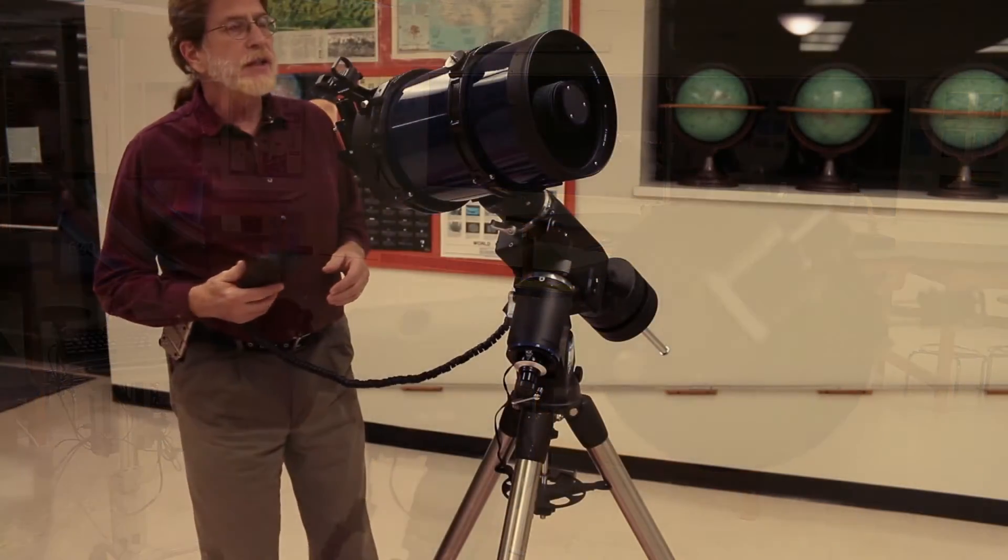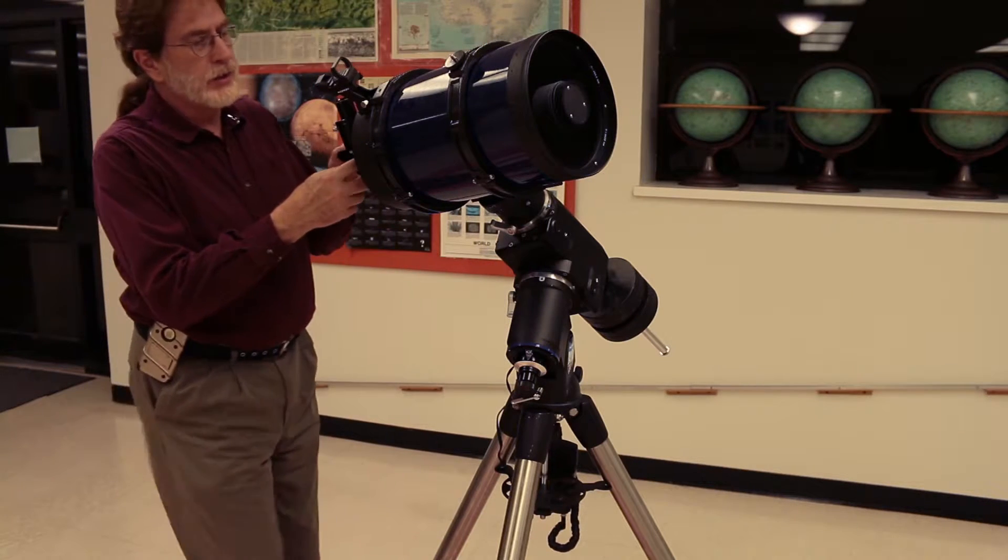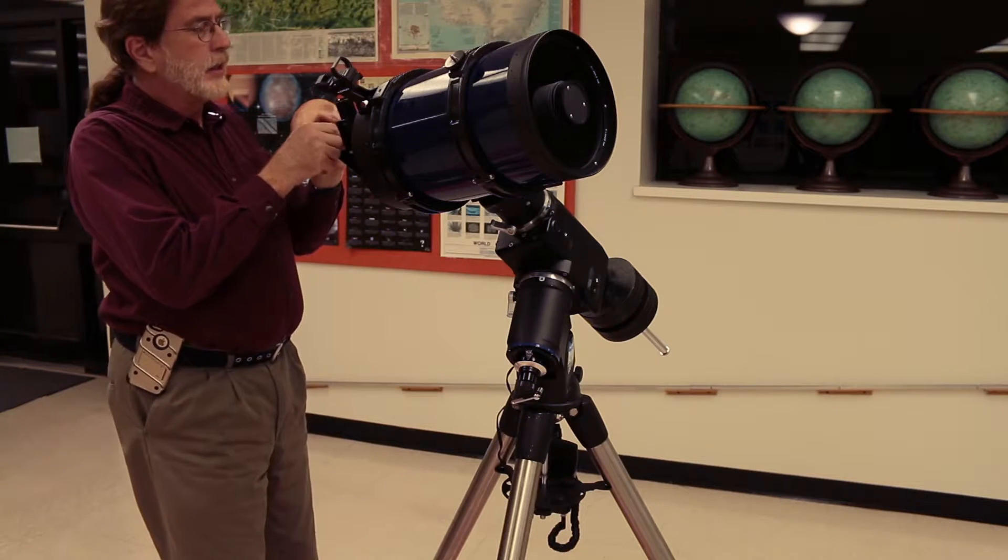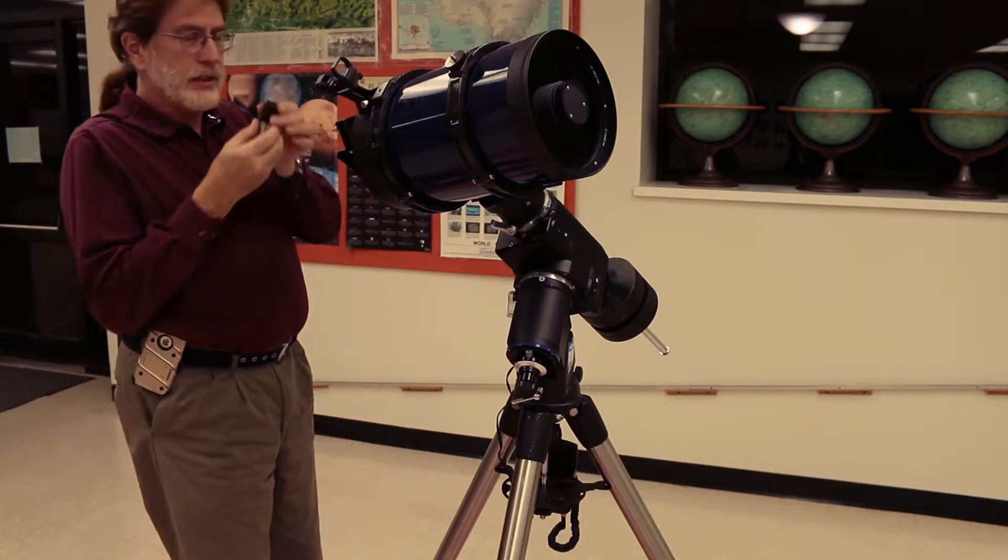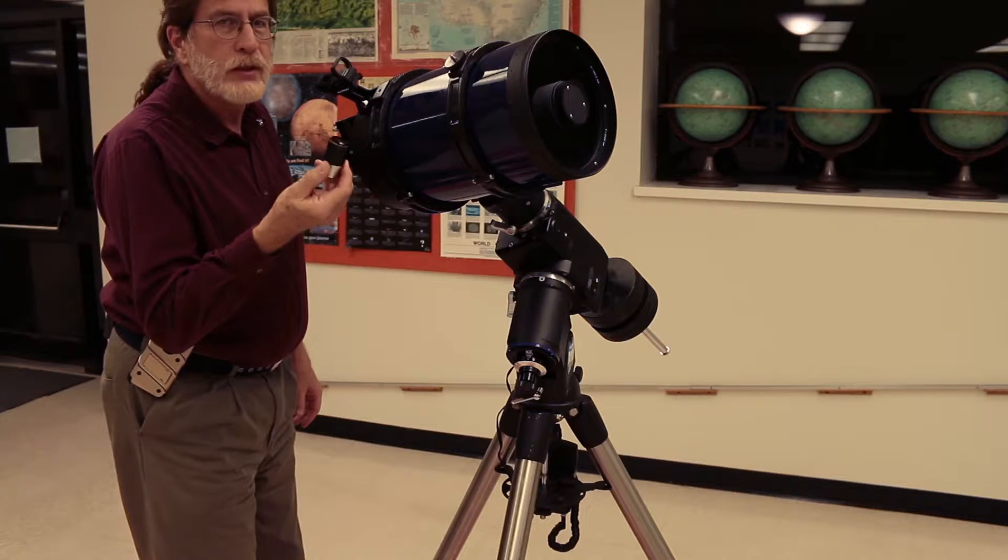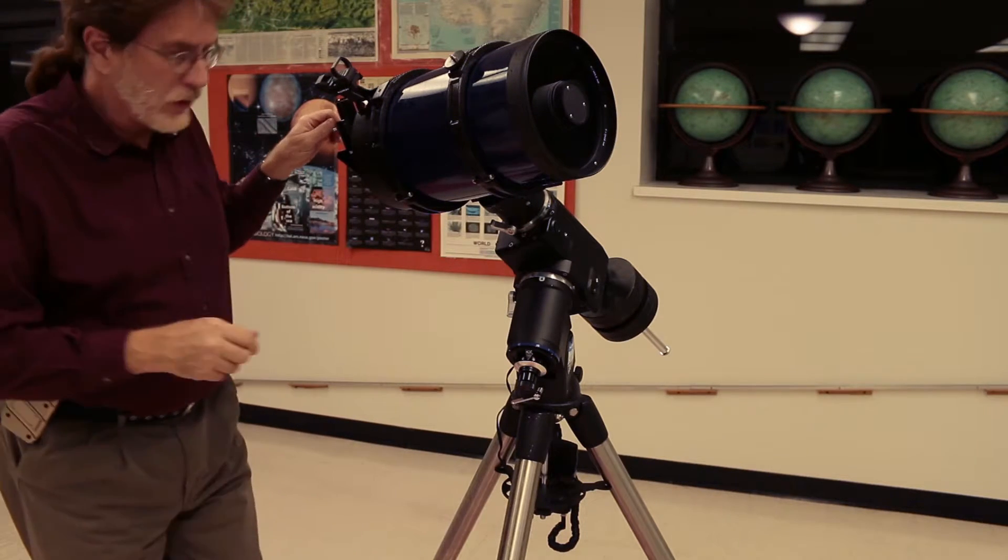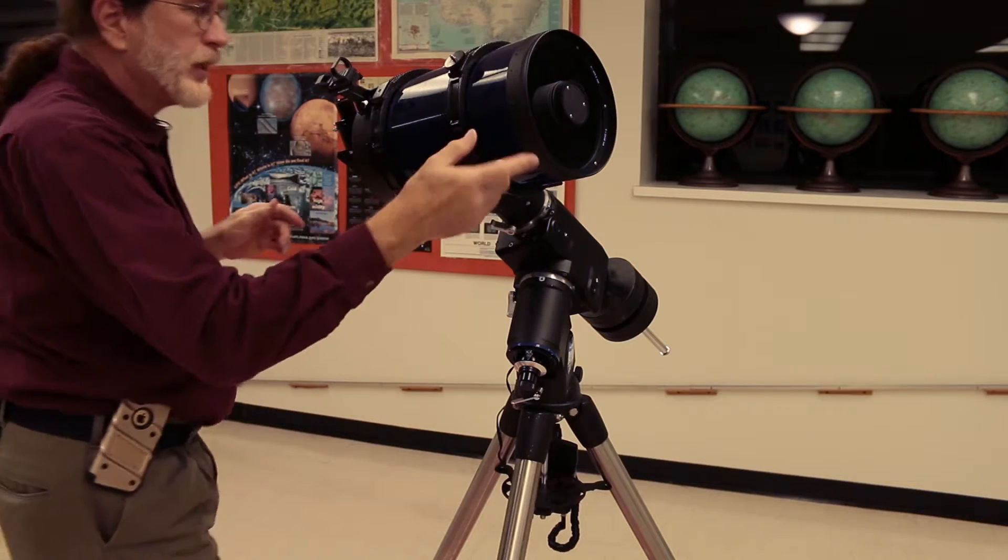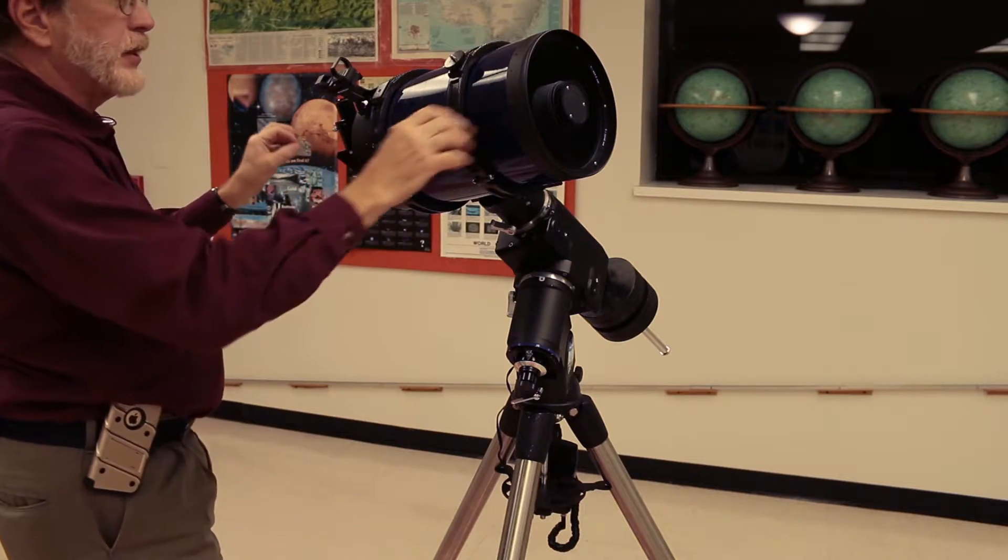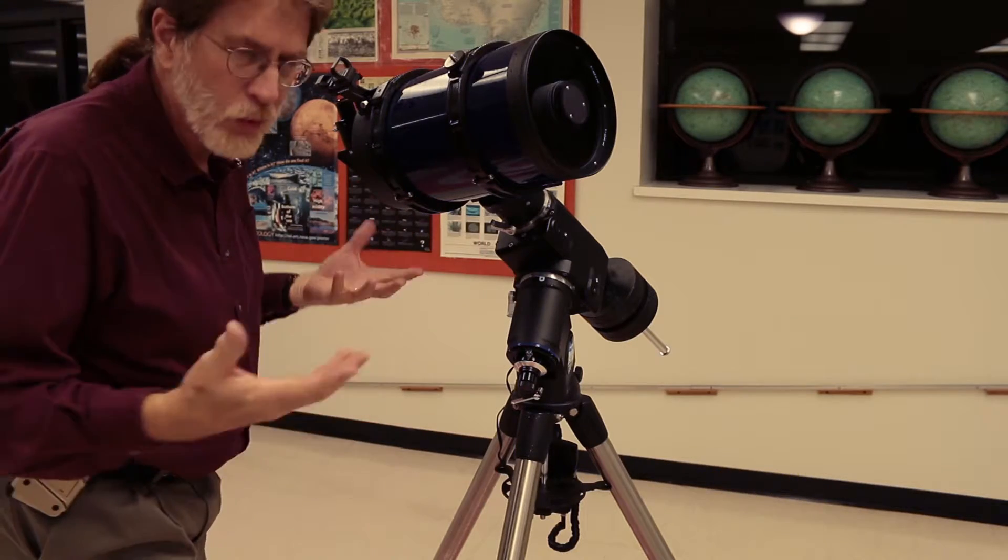So the telescope's pointed at the moon right now. What I have in the back of the scope is a diagonal, which makes it a little bit more convenient to look at some things. Right now I have an eyepiece which says 26 millimeters on it. That's the focal length of this eyepiece. The focal length of the telescope itself, and remember this is a folded optical system, so the light goes down the tube, bounces off a mirror down here, bounces off a second mirror. The two mirrors are different focal lengths. One's a negative, one's a positive focal length.